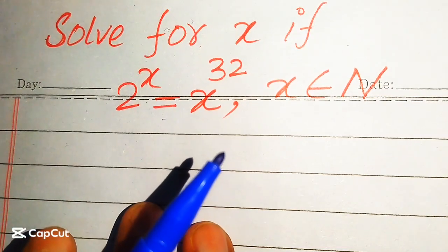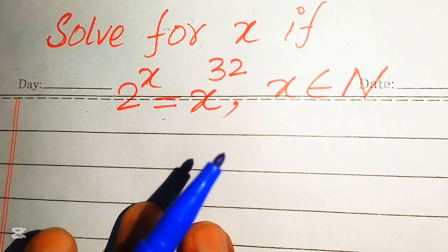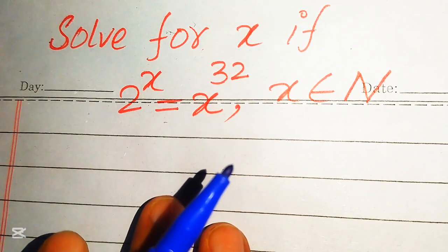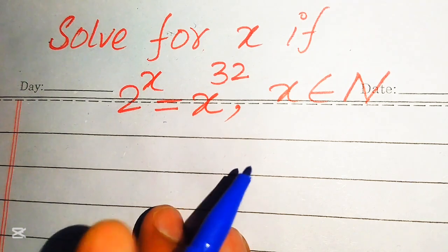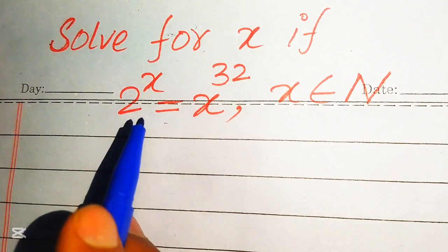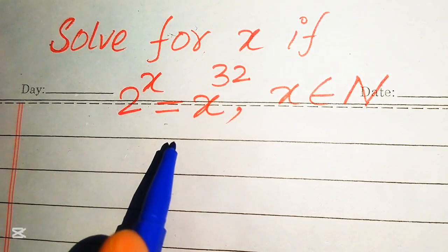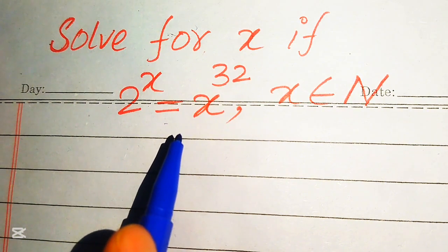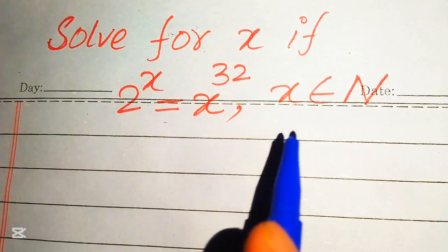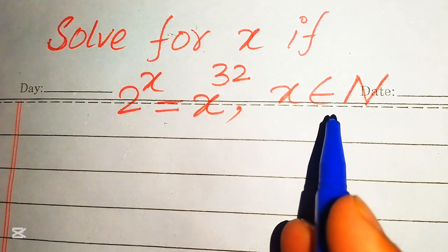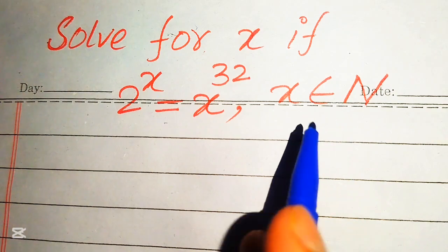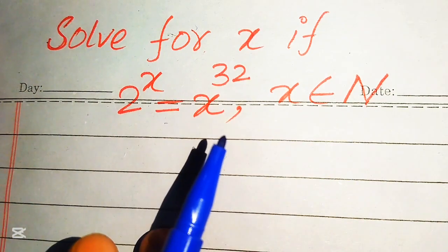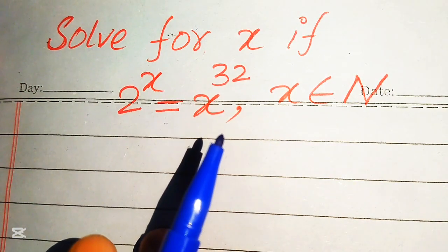Hello everyone, today I want to show you how to solve this problem for the values of x. We have 2 to the power of x equals x to the power of 32, and we solve this problem for the values of x where x must belong to the natural numbers.